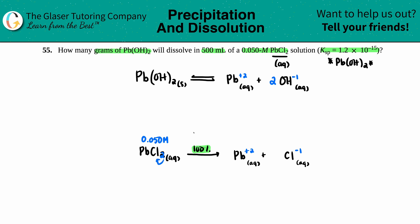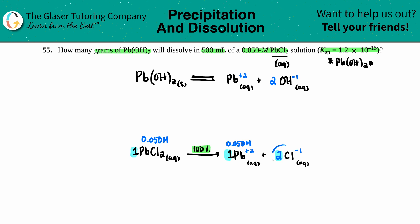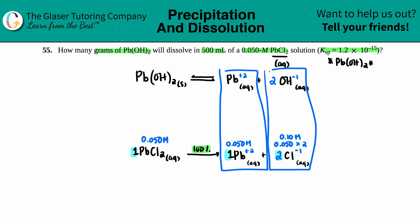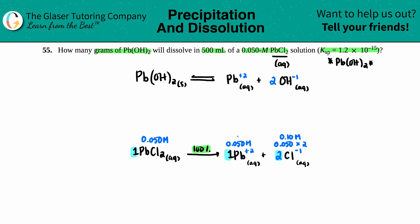There are two chlorines, so the ratio is 1:1:2. Since the lead ratio is 1:1, you start with 0.050 M Pb²⁺. For chloride it's 0.050 times 2, giving 0.10 M. But we only care about the common ion — the one that appears in both compounds — which is lead, Pb²⁺.